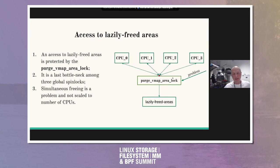The last one is about lazily freed areas. On the right side there is a similar picture — we have lazily freed areas as the third global data structure. The purge_vmap_area lock protects access to this data, and we have our users with exactly the same situation. We can summarize that simultaneous freeing or allocation is a problem and does not scale to the number of CPUs.